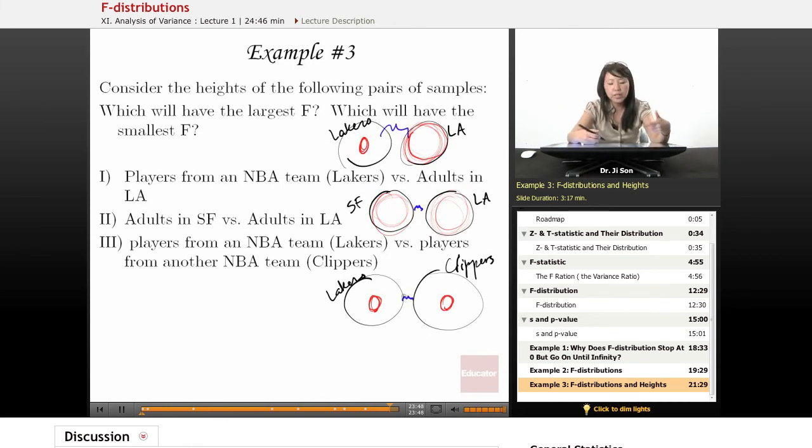So which ones of these will probably have the largest F? I'm guessing the biggest difference between the groups might actually be this one. So I would guess, I would go with this one, given that I'm not really sure about the variance here.